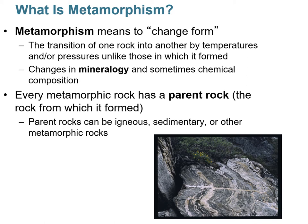When metamorphism occurs, it follows changes in mineralogy, and occasionally you'll see changes in chemical composition within the rock. Every metamorphic rock has a parent rock — that's what it used to be before it became a metamorphic rock. For example, a sedimentary rock like sandstone can transform into a metamorphic rock.